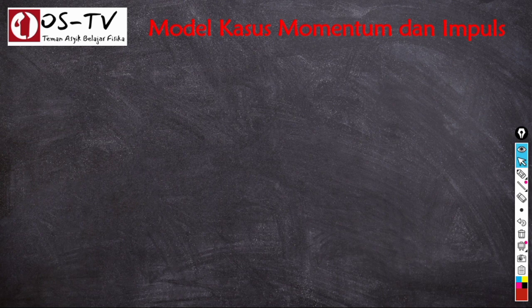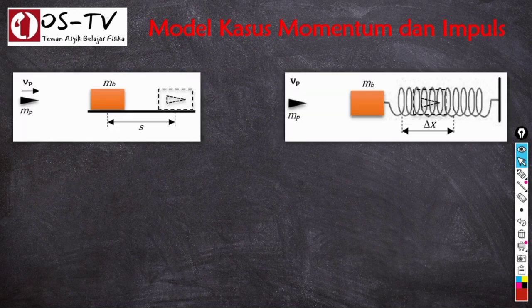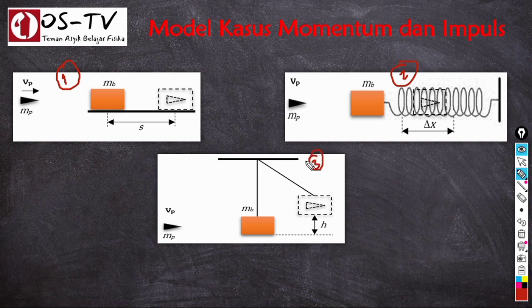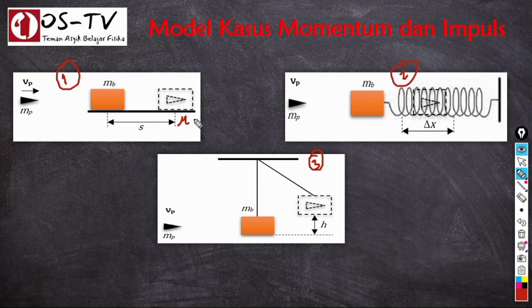Baiklah, sekarang kita lanjutkan pada pokok bahasan momentum dan impuls. Model-model kasus momentum dan impuls yang sering keluar dalam UTBK dan dapat diselesaikan dengan cara cepat di antaranya berkaitan dengan peluru yang ditembakkan ke dalam balok. Kasus 1: peluru bersarang di dalam balok sehingga balok bergeser sejauh S dari posisi mula-mula, dan bidang di tempat balok berada bersifat kasar dengan koefisien gesekan μ.